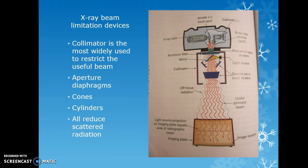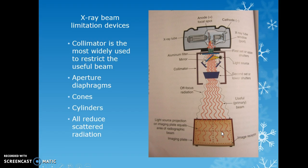Beam limitation devices include the collimator, which is the most widely used to restrict the useful beam using shutters to close down the field size. Aperture diaphragms, cones, and cylinders can be attached to the collimator housing to focus radiation into a circle or tight square. All of these reduce scatter radiation so off-focus radiation is narrowed and redirected toward the center of the light field.